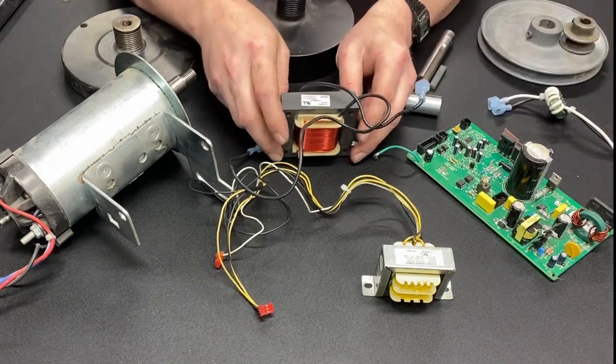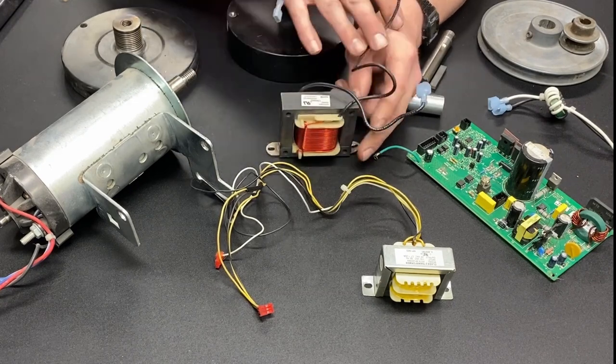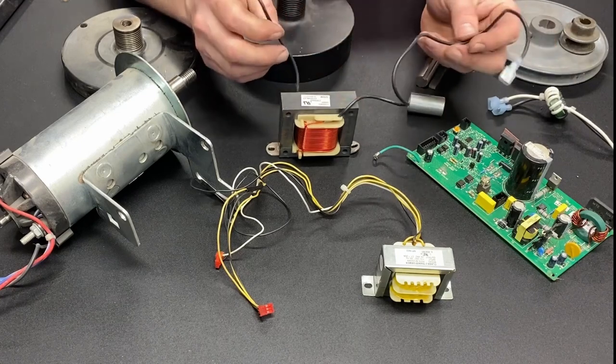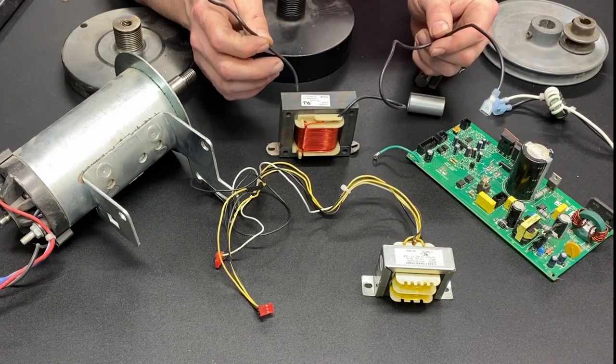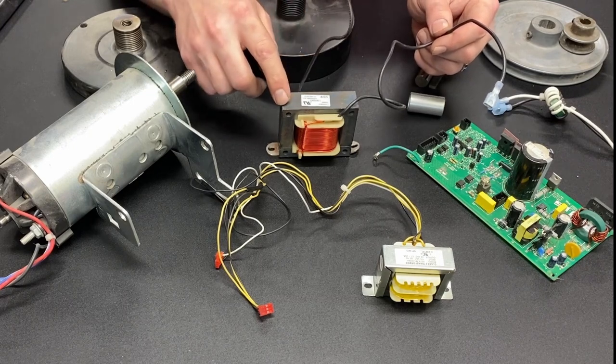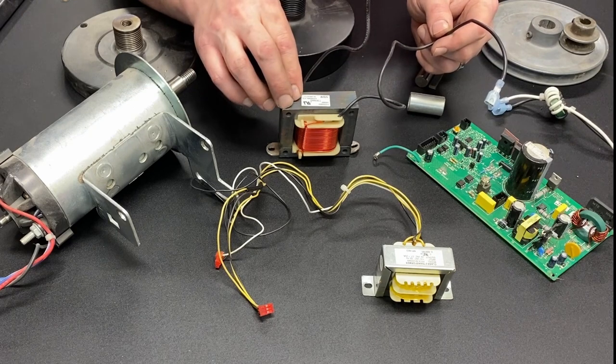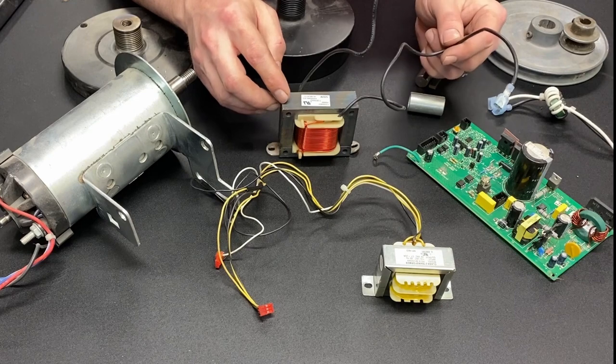Now, this is a DC choke, and this is super important if you're running an SCR-type voltage controller, and not a bad idea even if you're running a treadmill motor control board. This works on the same concept as the inductor. It creates a magnetic field, and that helps eliminate spikes in the power.